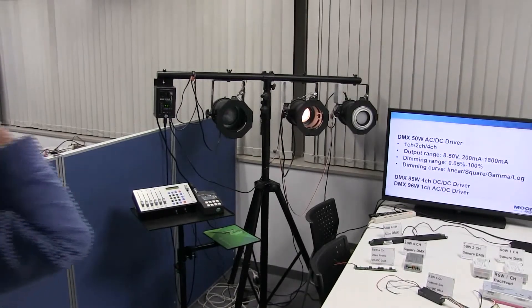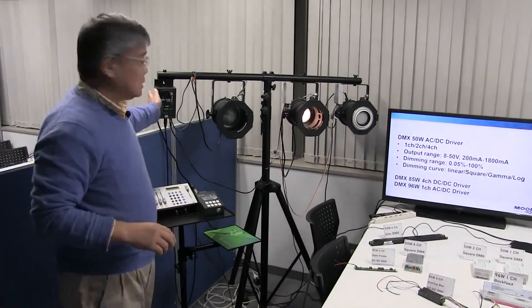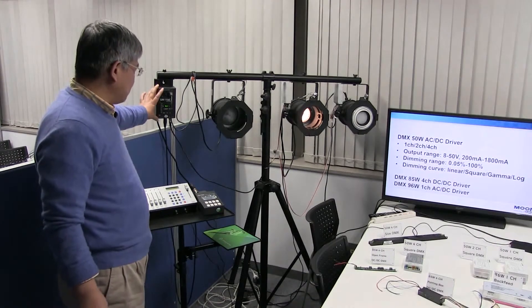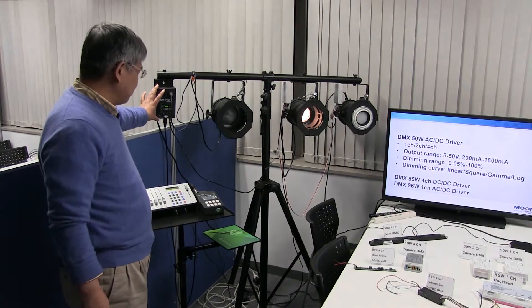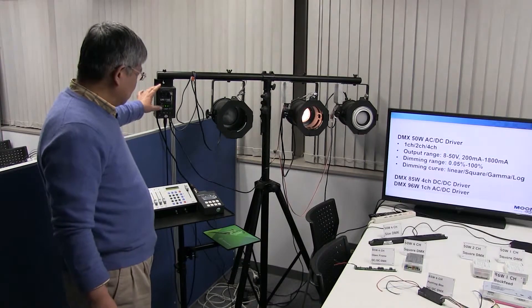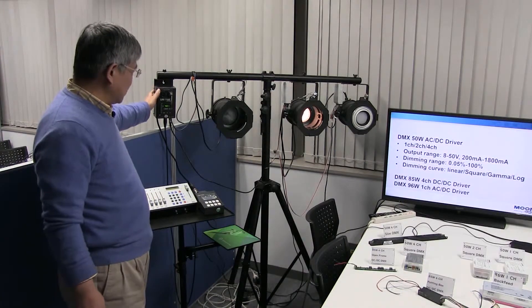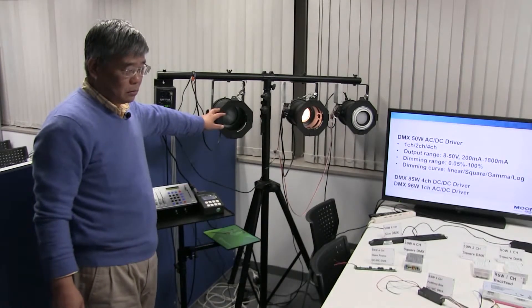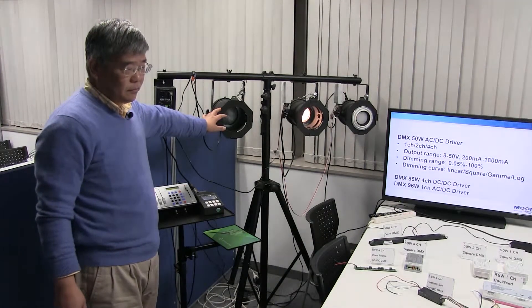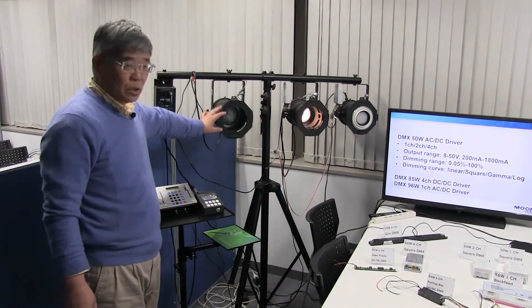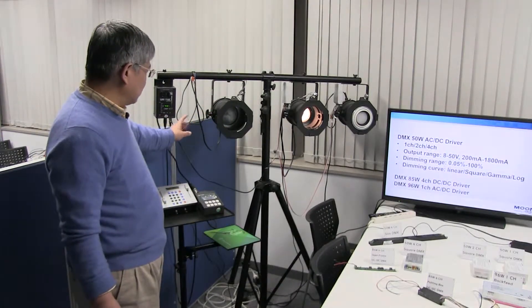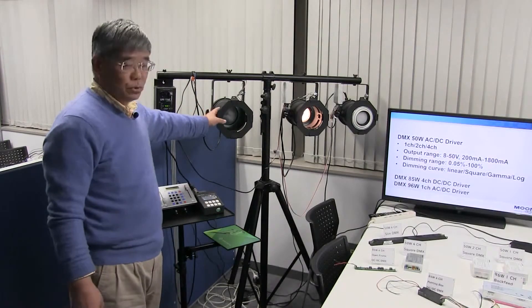There are some simple DMX lighting equipment at the railing. This is an AC output DMX controller, also called DMX signal generator. This is the traditional halogen lamps used in stage lighting, not LED lamps. It can be controlled by the AC output DMX controller. That is powered with 100V alternate current directly.